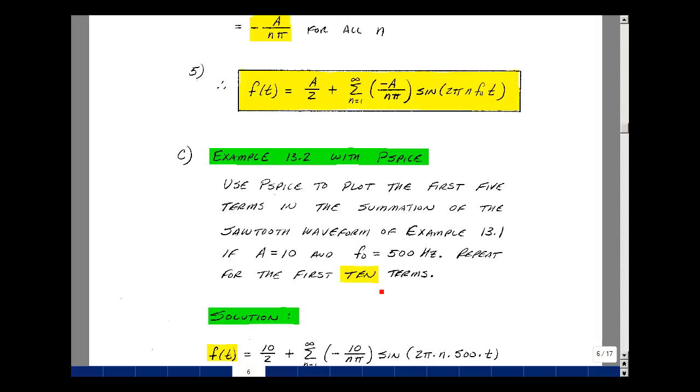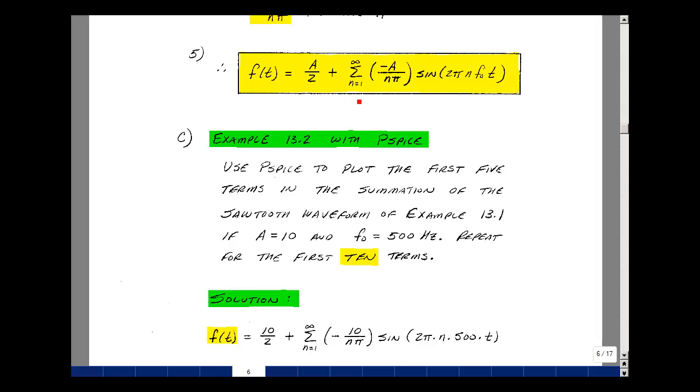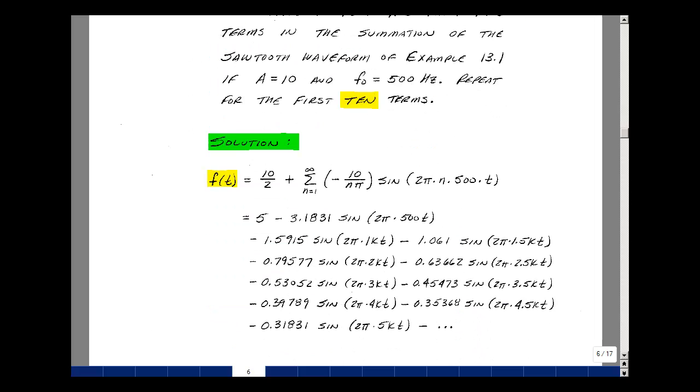Let's see the difference between 5 and 10 terms in the summation. Evaluating the formula above, I have a which is equal to 10 divided by 2, summation from n equals 1 to infinity, of minus 10 over n pi, times the sine of 2 pi n f0 times t, and f0 is equal to 500.